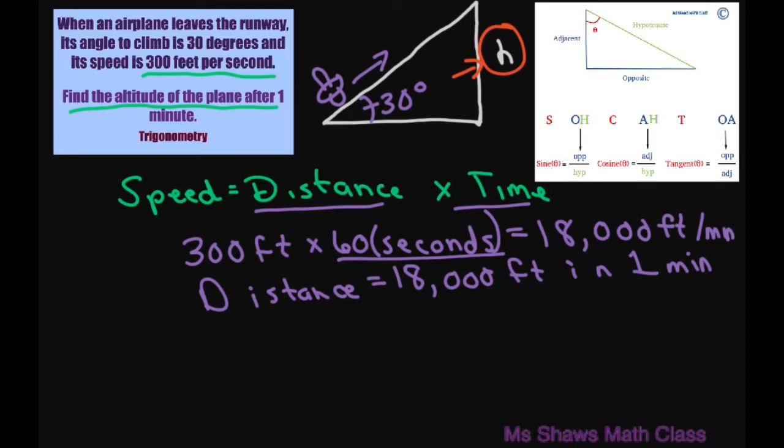So that's going to be 18,000 feet here. This is 18,000 feet here. All right, so what we're going to use is sine because sine is opposite over hypotenuse.